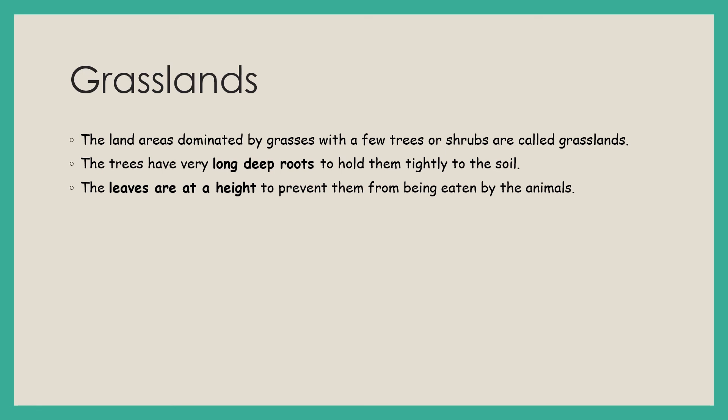Grasslands are areas dominated by grasses with few trees or shrubs. The color of the area is usually light brownish. The trees have long deep roots which hold them to the soil. The leaves of trees are at a height so that animals cannot easily eat them.